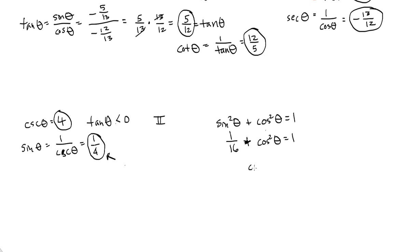If I subtract 1 sixteenth from both sides, I get cosine squared theta equals 16 sixteenths minus 1 sixteenth is 15 sixteenths. I square root both sides. Get rid of that square, because I'm square rooting. I square root both sides, and I get the cosine of theta equals plus or minus the square root of 15 over the square root of 16, which is 4.